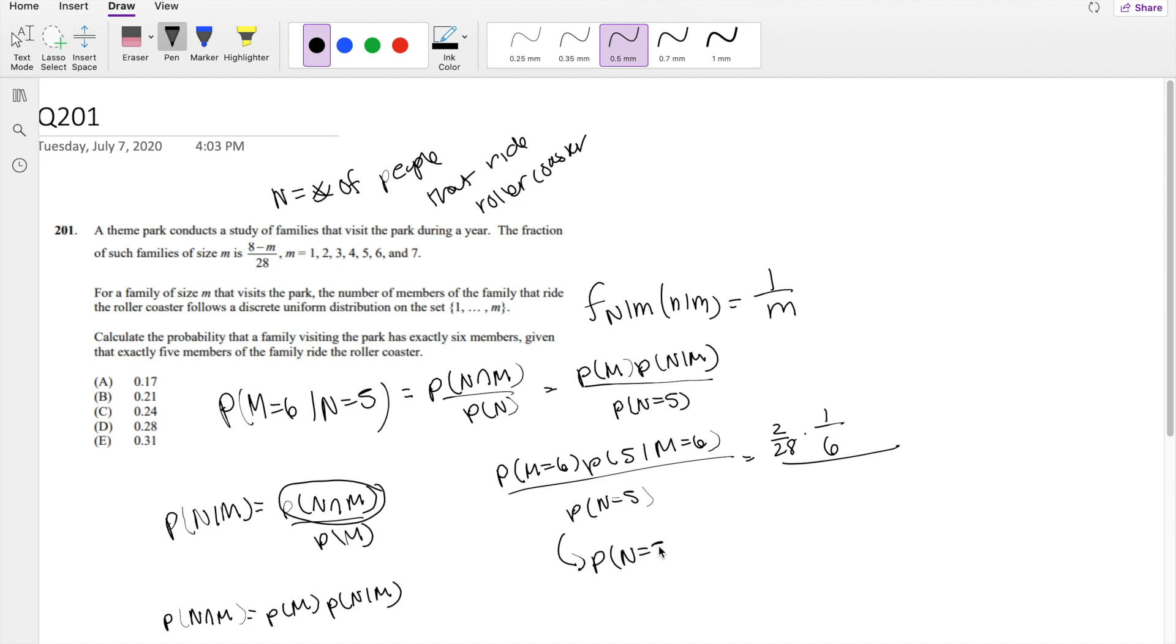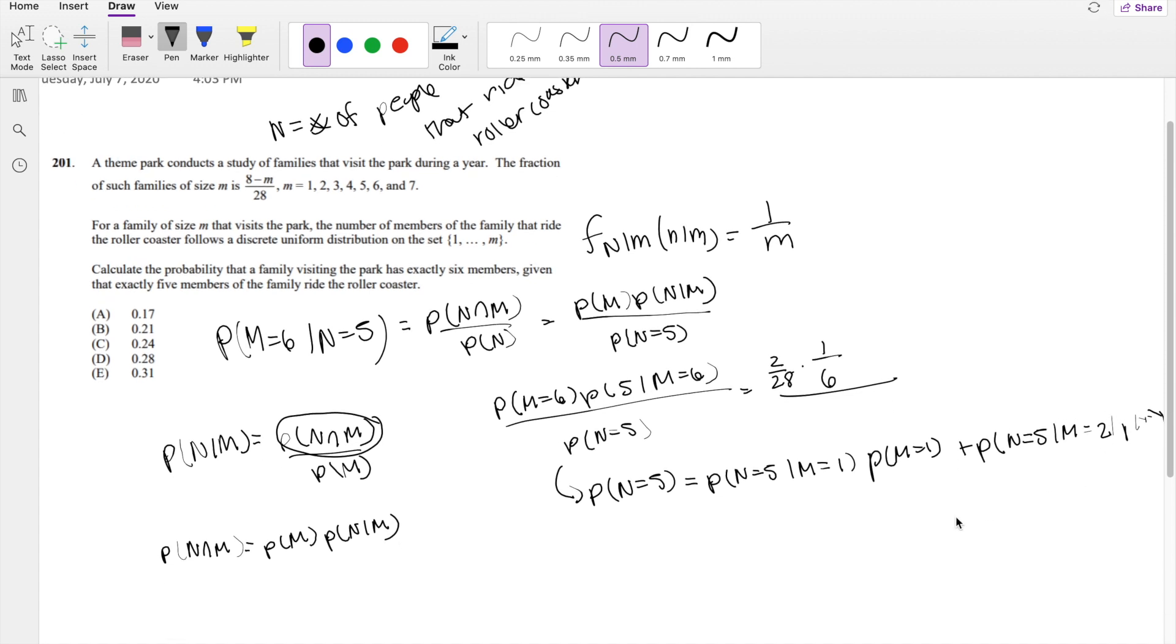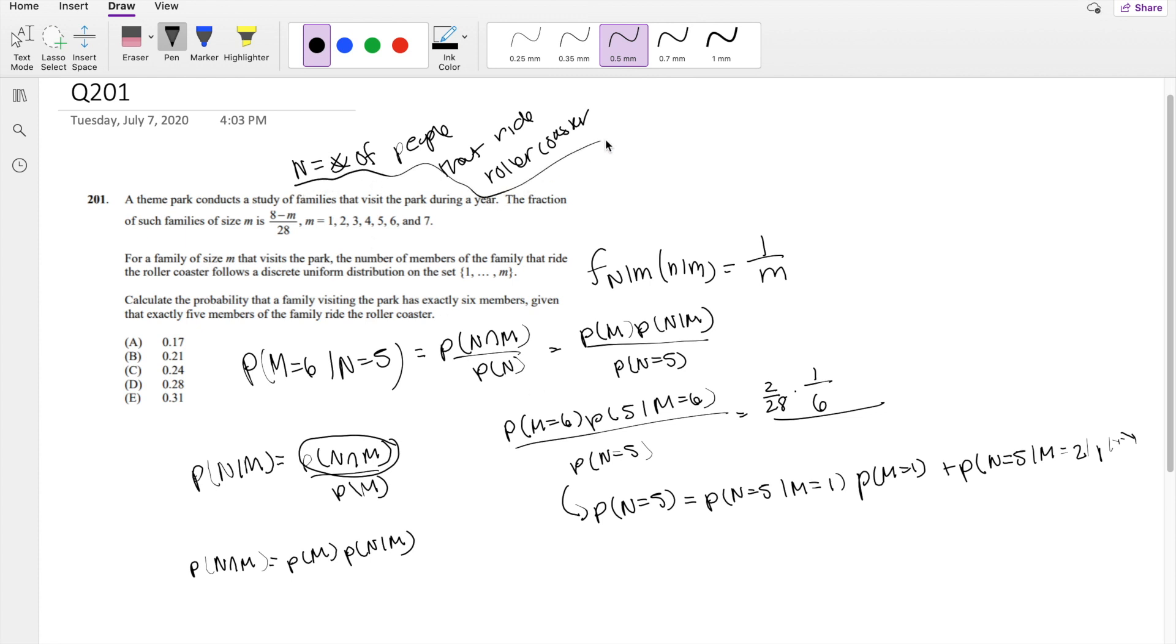Well, you know for a good chance that this is going to be part of the denominator because that's just how conditional probability works. But how much? We can use the law of total probability and break it down. Probability that n is equal to 5 is equal to probability of n is equal to 5 given m is equal to 2 times probably that m is equal to 2 and so on.